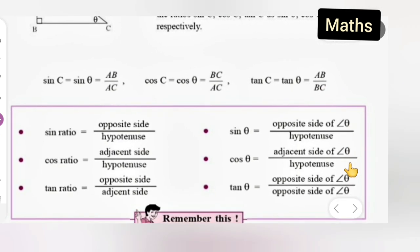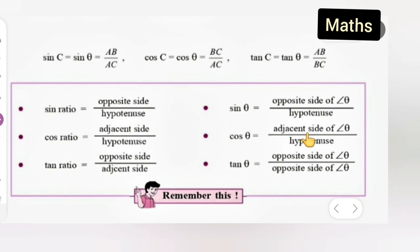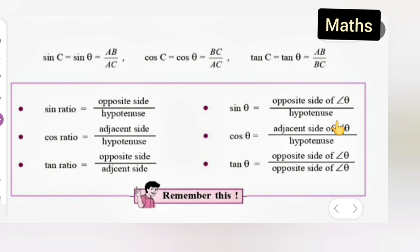These are the sine ratios you will have to remember: sine ratio is opposite side upon hypotenuse, cosine ratio is adjacent side upon hypotenuse, and tangent ratio is opposite side upon adjacent side. Similarly, sin theta is opposite side of angle theta upon hypotenuse, cos theta is adjacent side of angle theta upon hypotenuse, and tan theta is opposite side of angle theta upon adjacent side.